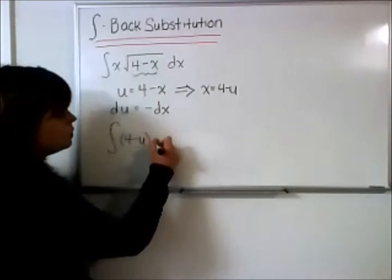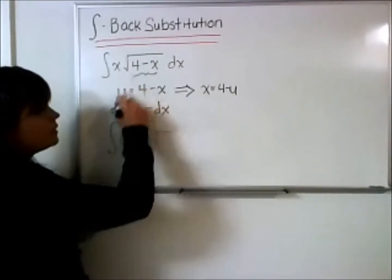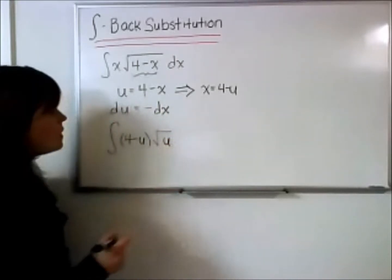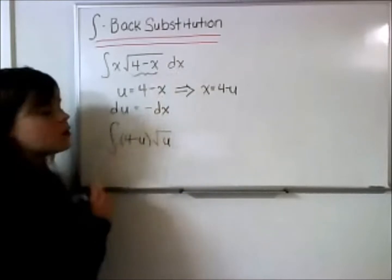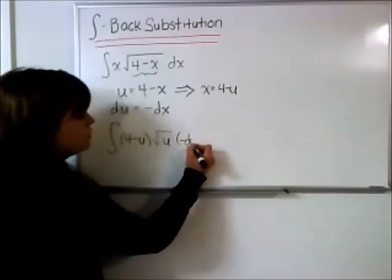We have the square root of 4 minus x, which we called u in our substitution. And then we have this dx to worry about. Notice all we have is a negative sign, so this just becomes a negative du.